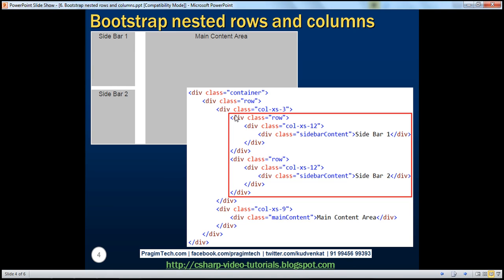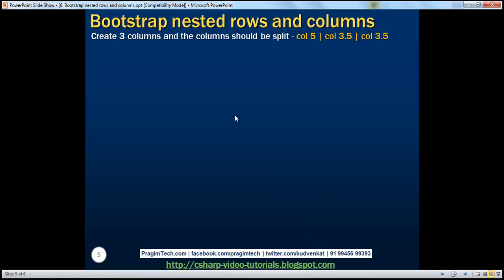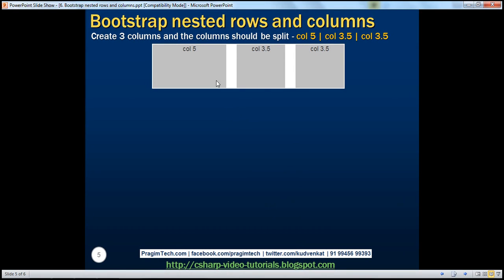Now let's look at another example of where nested rows and columns could be really helpful. Let's say we want to create a three-column layout where the first column is five logical units wide, leaving us with seven logical units. We want to split those seven logical units into two equal halves — 3.5 and 3.5. This is a challenge without nested rows and columns, because with an odd number of available units you can only split them as 1+6, 2+5, or 3+4. But with nested rows and columns, splitting to 3.5 and 3.5 is easy to achieve.